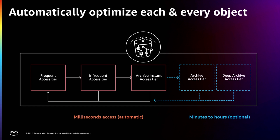Intelligent-Tiering is also well suited for archival data. You can opt into two archive access tiers at the bucket, prefix, or object tag level. For a bucket where asynchronous access after one year is acceptable — accessible in minutes or hours — you can opt into the archival access tiers. It moves data down automatically into one of those archive tiers, and once you access the data, it moves back up into the frequent access tier and the whole journey starts again.